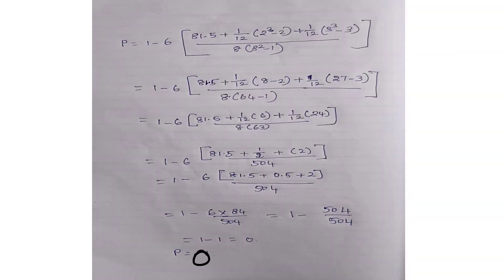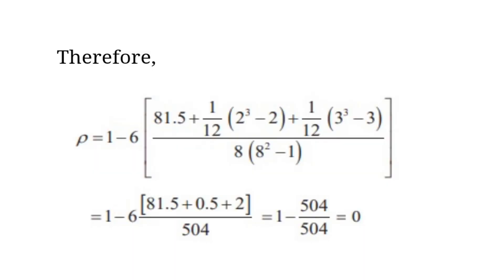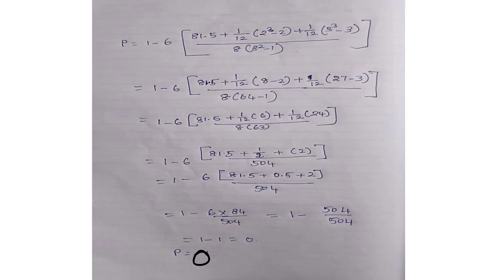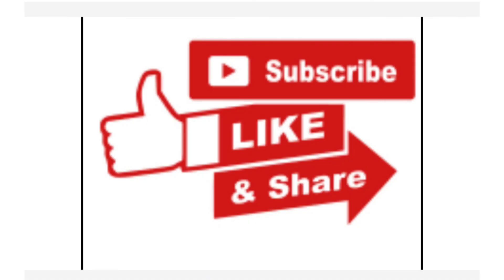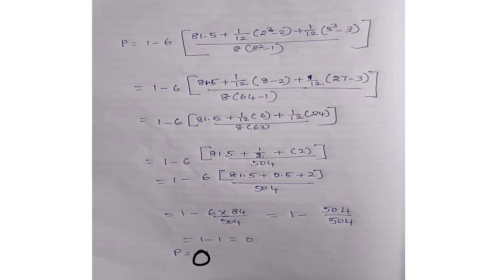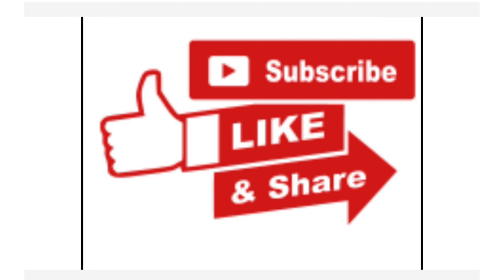So rho equals 0, which clearly shows that there is no correlation. Zero correlation means there is no correlation between the marks obtained by the students in commerce and in mathematics. Hope this video is clear for you all. If you like this video please give a thumbs up, share, and subscribe to Science Easy Tech Channel. My previous video links are in the description box. Thank you friends, keep supporting Science Easy Tech Channel.